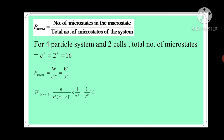Now, take the example of a 4-particle system with 2 compartments or 2 cells. In this case, the total number of microstates is given by c raised to n, where c is the number of compartments and n is the number of particles. So, 2 raised to 4 is equal to 16. Therefore, P_macro equals W upon c raised to n, equals W upon 2 raised to n. So, W for macrostate (r, n minus r) equals n factorial upon r factorial into n minus r factorial, into 1 upon 2 raised to n, which equals 1 upon 2 raised to n into nCr.